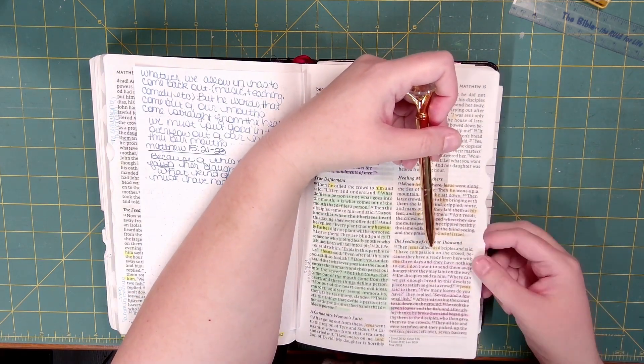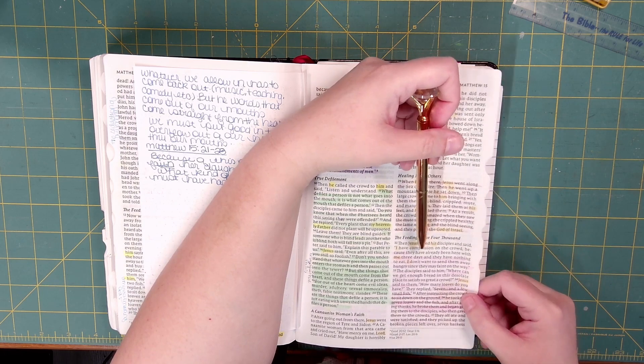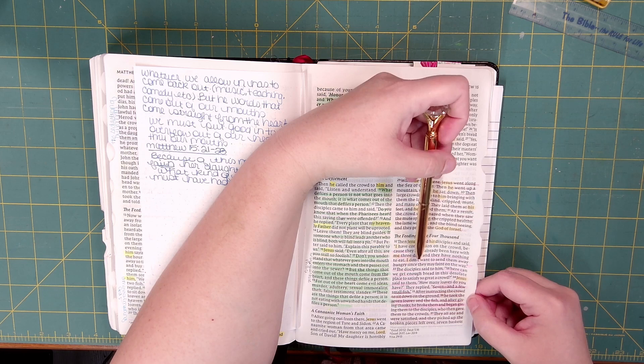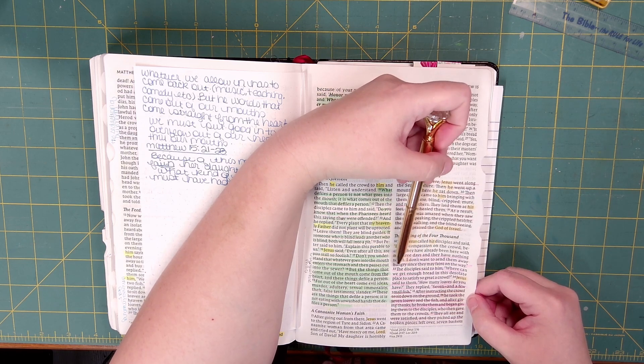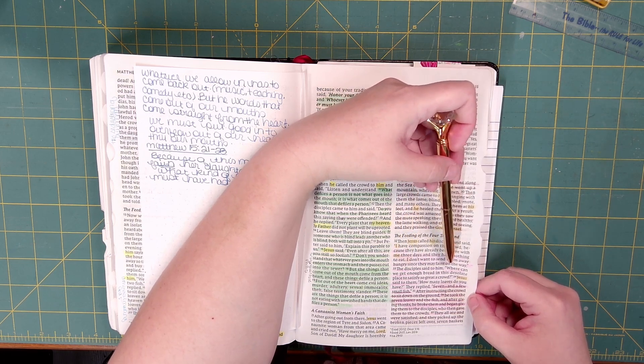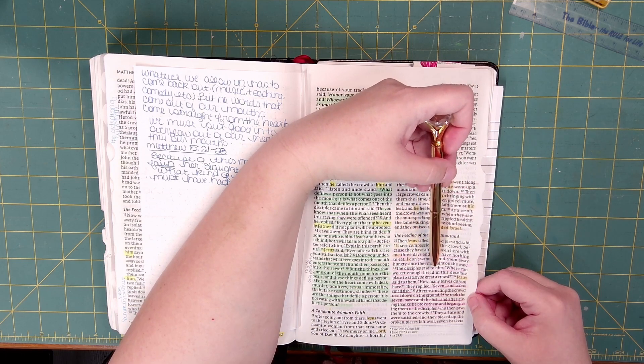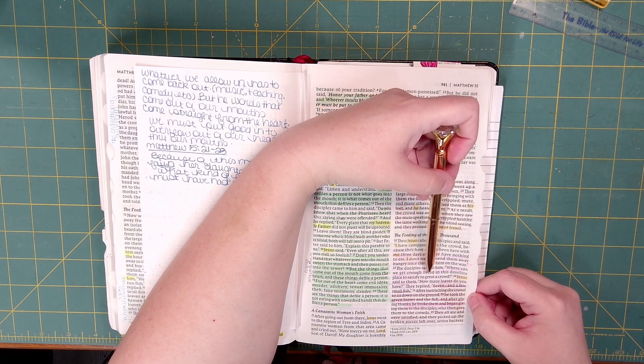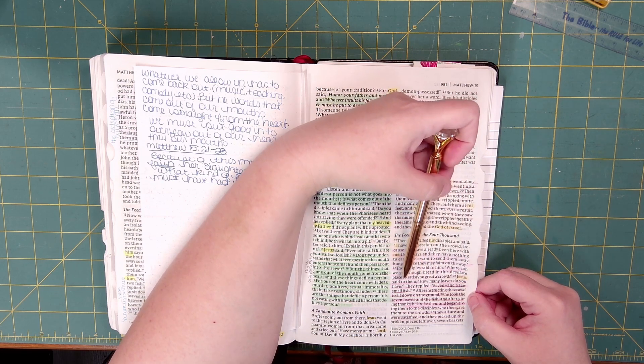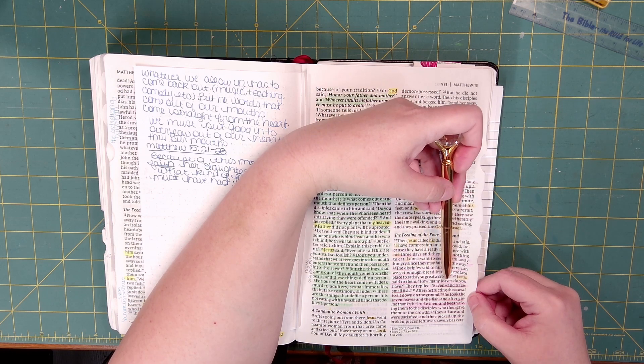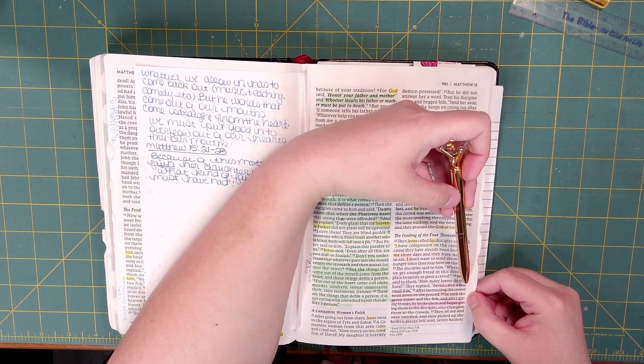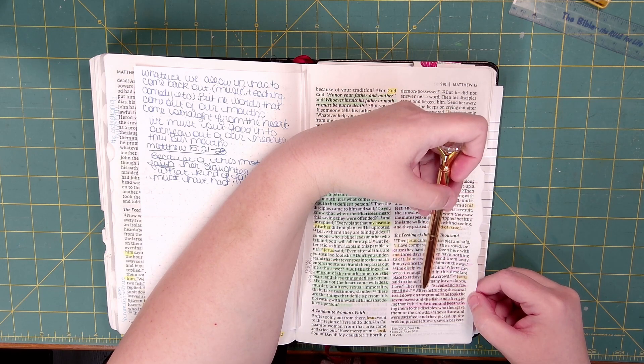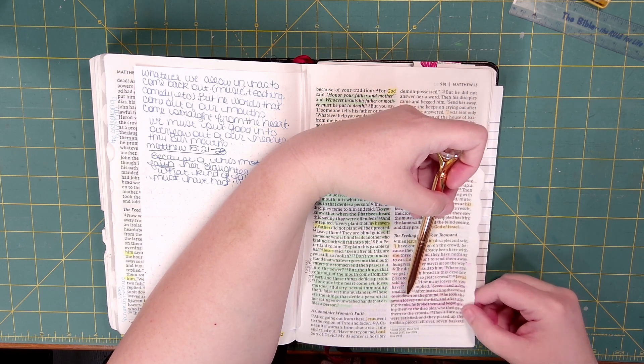Then Jesus called his disciples and said, I have compassion on the crowd, because they have already been here with me three days, and they have nothing to eat. I don't want to send them away hungry, since they may faint on the way. The disciples said to him, Where can we get enough bread in this desolate place to satisfy so great a crowd? Jesus said to them, How many loaves do you have? They replied, Seven, and a few small fish.